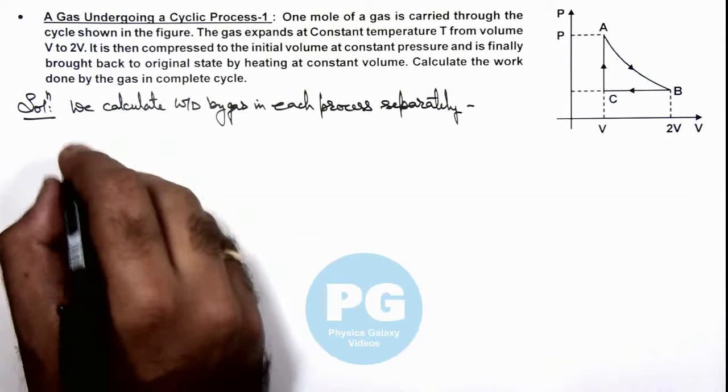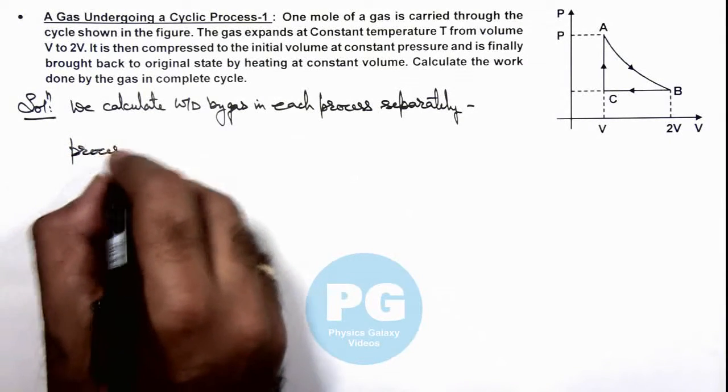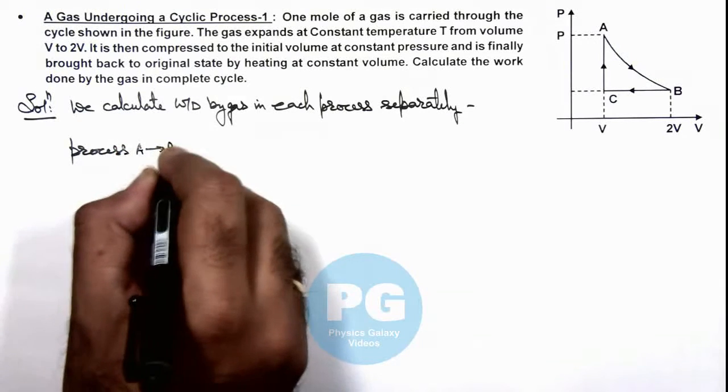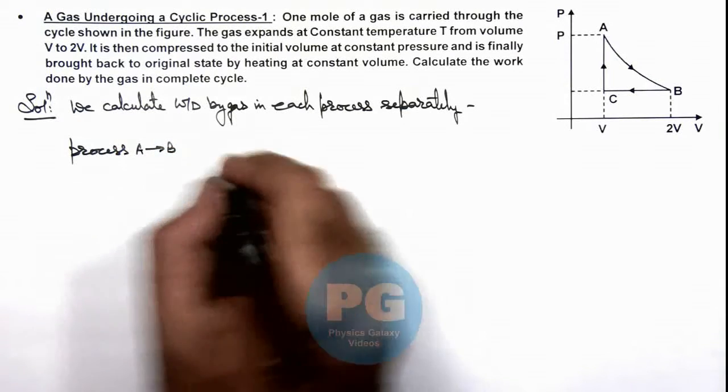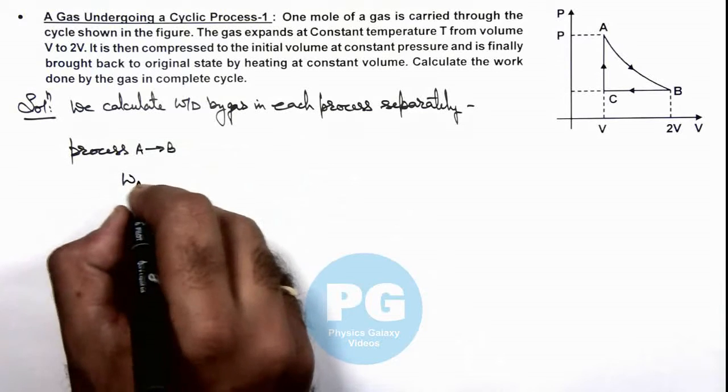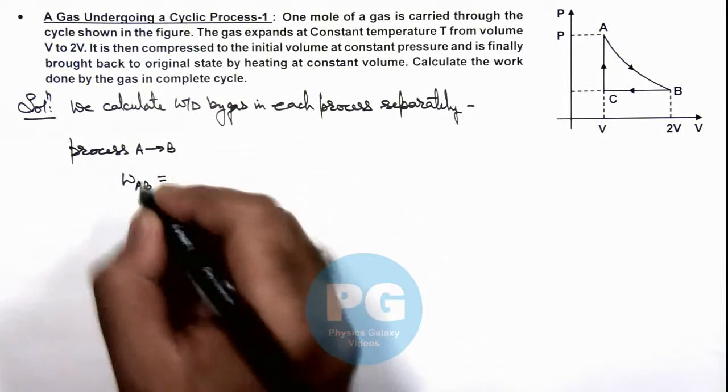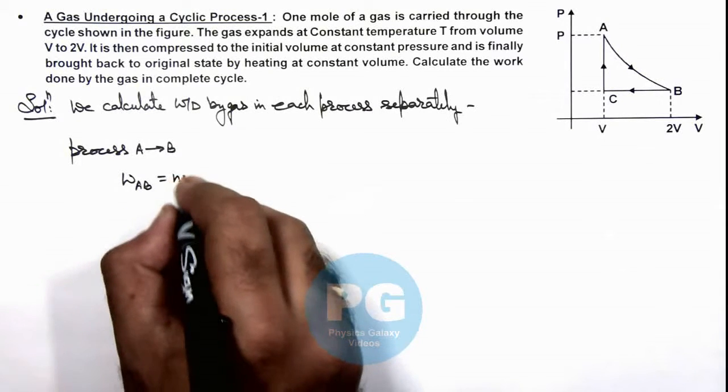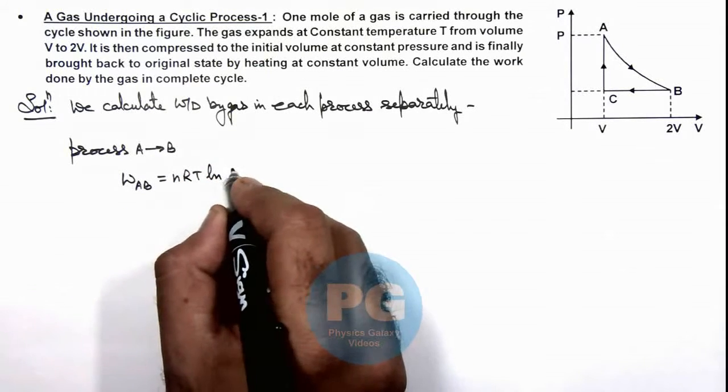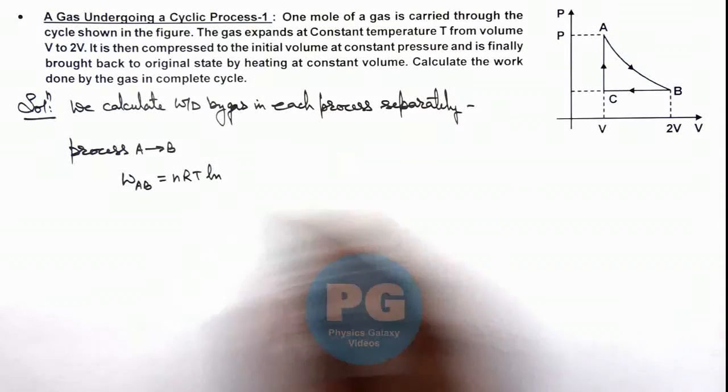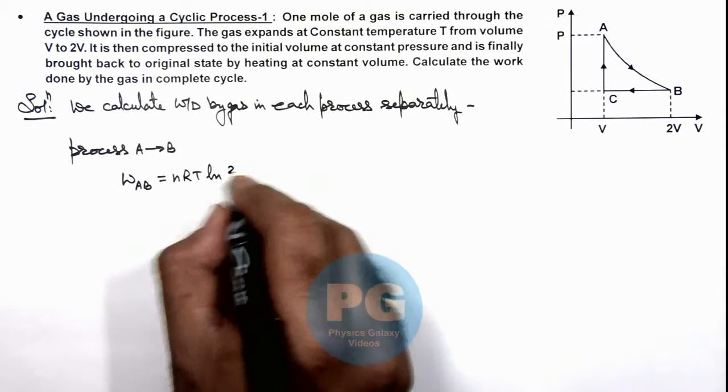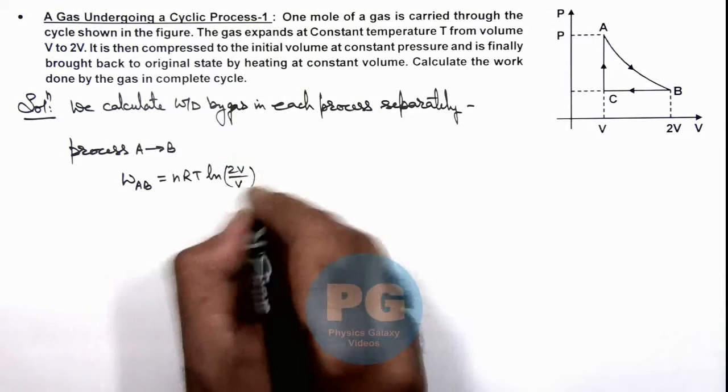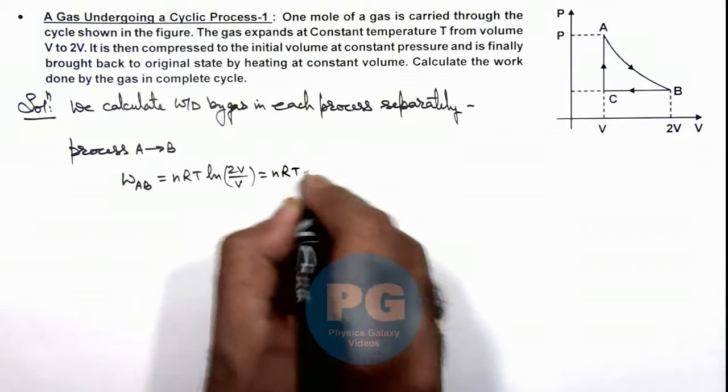For process A to B, the work done by the gas is given by the isothermal process formula: W = nRT ln(V2/V1). Here, the final volume is 2V upon V, so this is given as nRT ln(2).